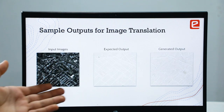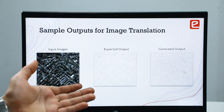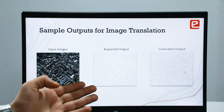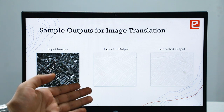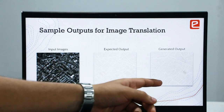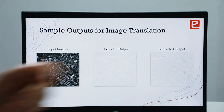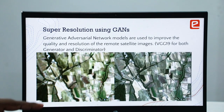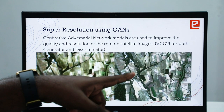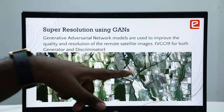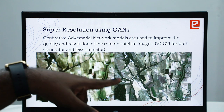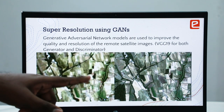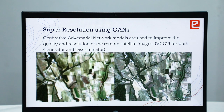Here we can see some outputs of the model: the input image from a satellite, the expected output from the dataset, and the generated output of our model. We also show a blurry satellite image and what we obtained is a super resolution version of the same image — this is one application of GANs.